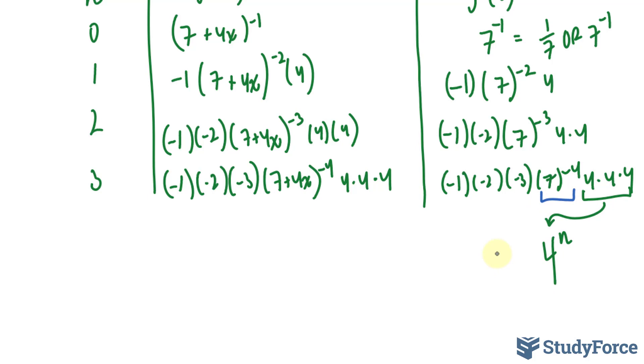This part can be written as 7 raised to the power of negative n minus 1. And the reason why that works is because all of them are negative.